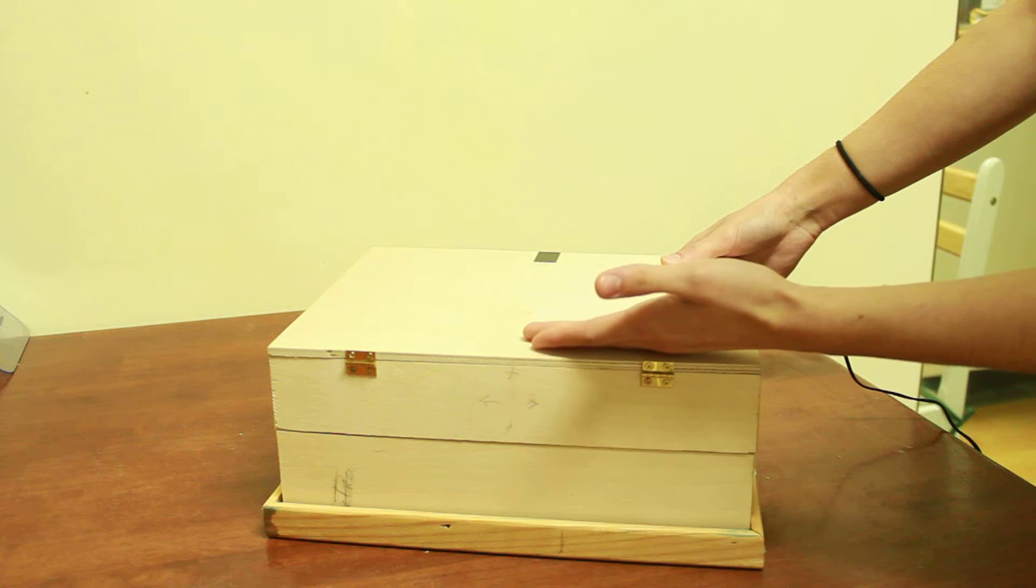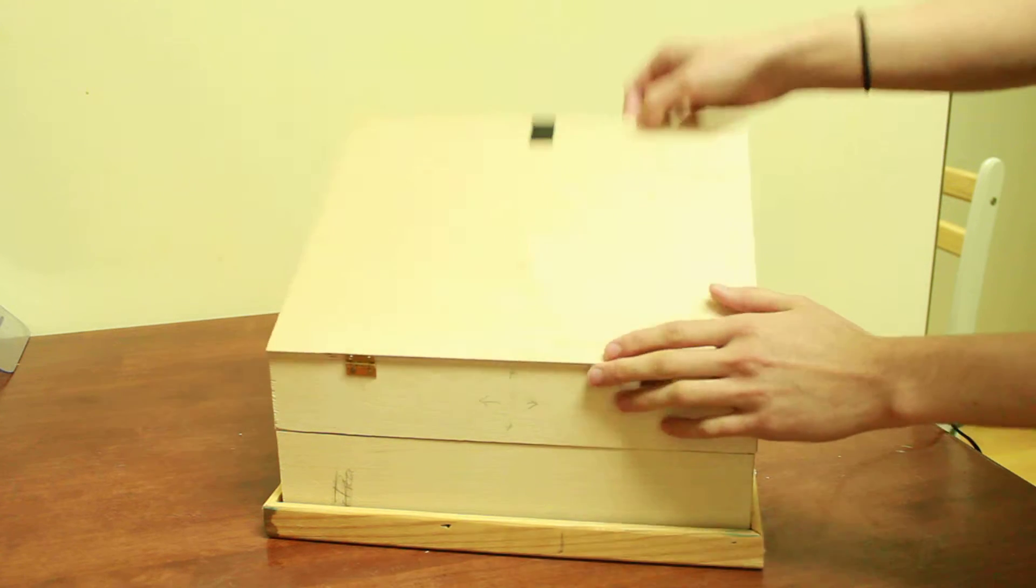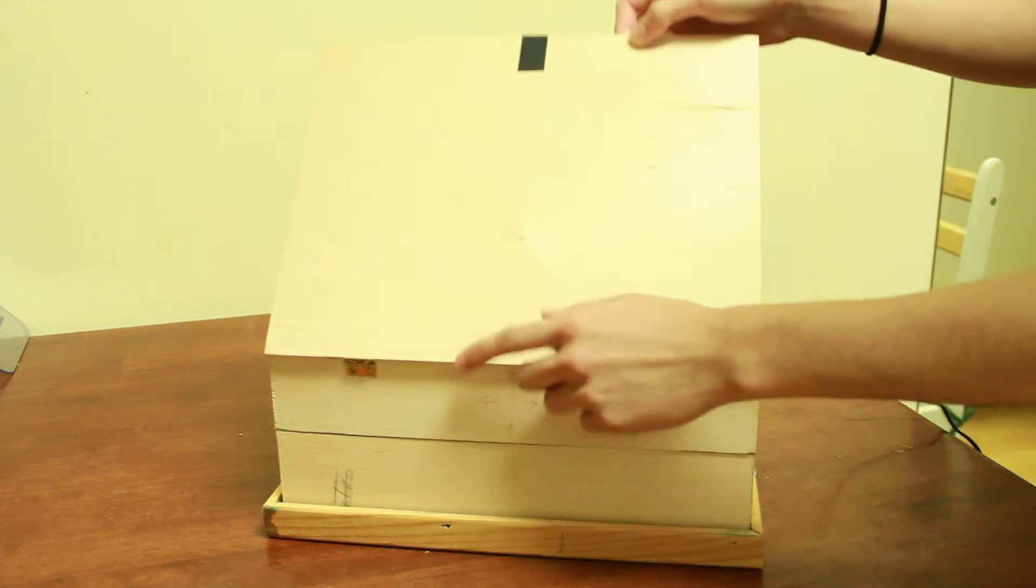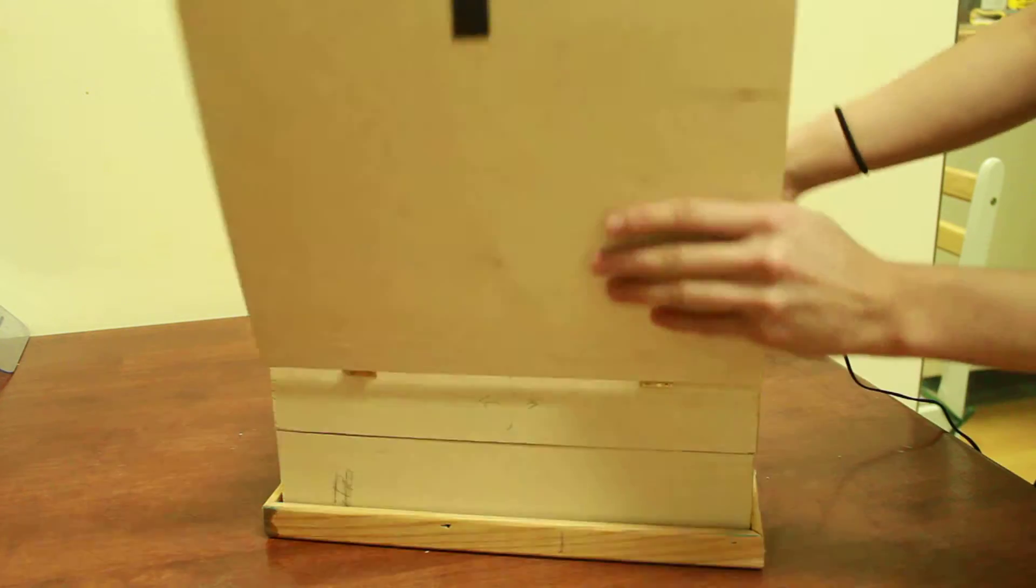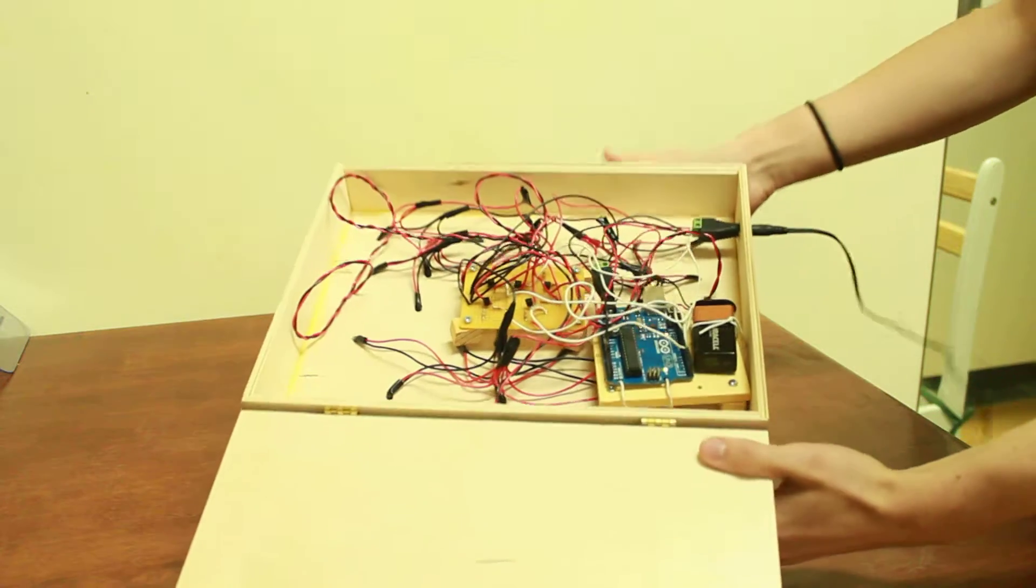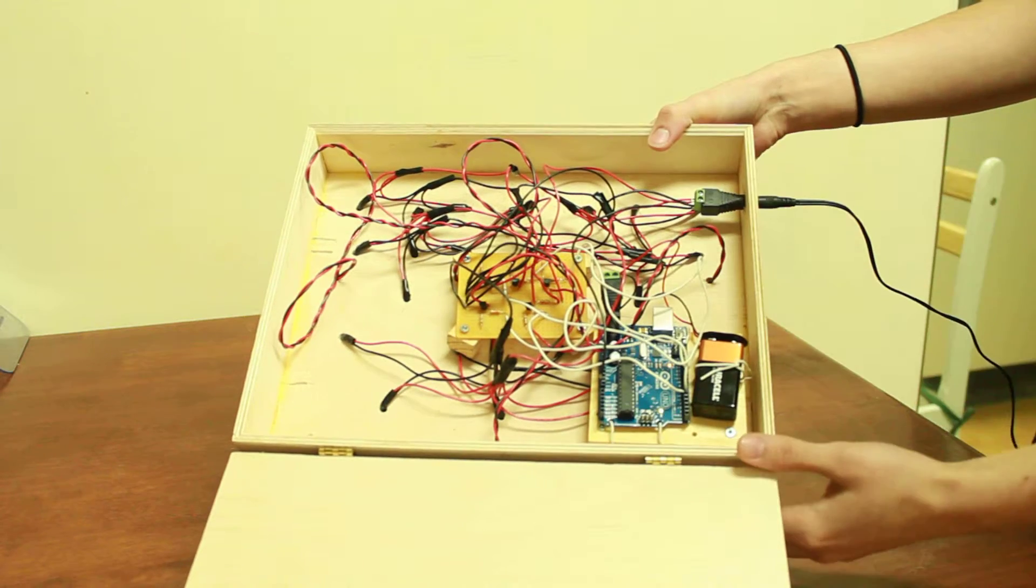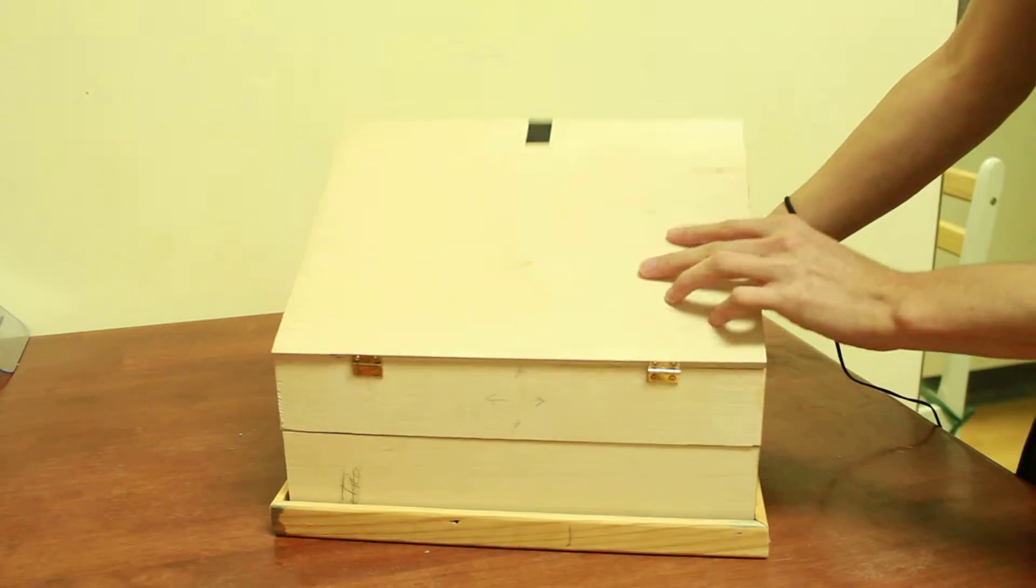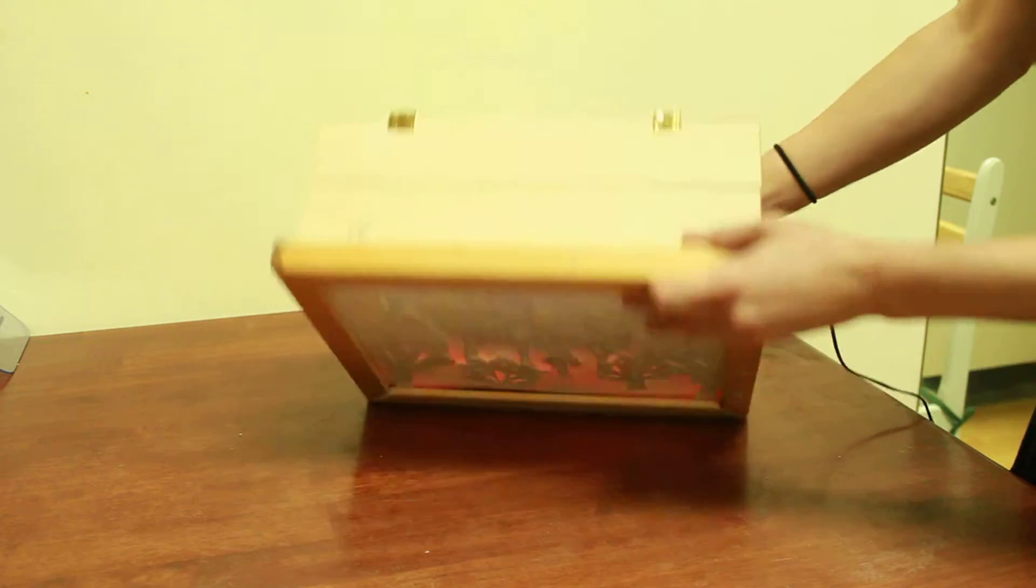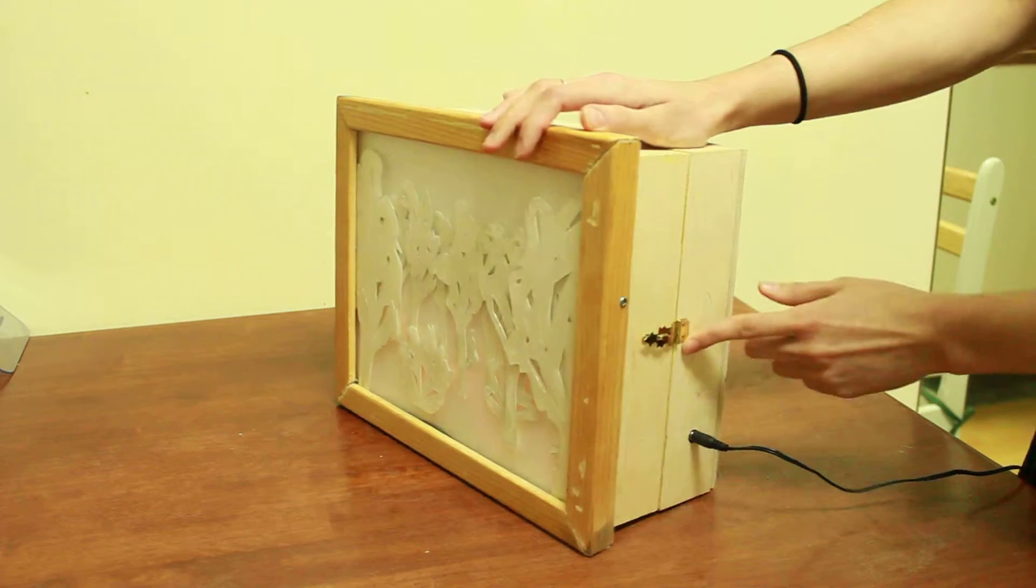The top opens up. The hinges help, so it opens up so that inside you can put all the circuitry and everything. So the second box, you're able to open through a hinge over here.